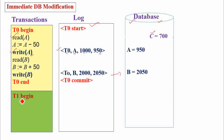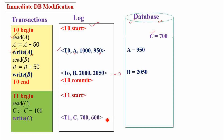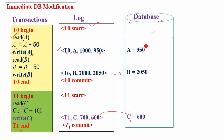The next transaction T1 starts its execution. When the begin statement is executed, the corresponding entry is made into the log. When the write operation is performed, the corresponding update record is made, and immediately after that, the update is made into the database — so the updated value of C is 600. When T1 end is executed, T1 commit is recorded. The final values of A, B, and C are 950, 2050, and 600, putting the database in a consistent state.